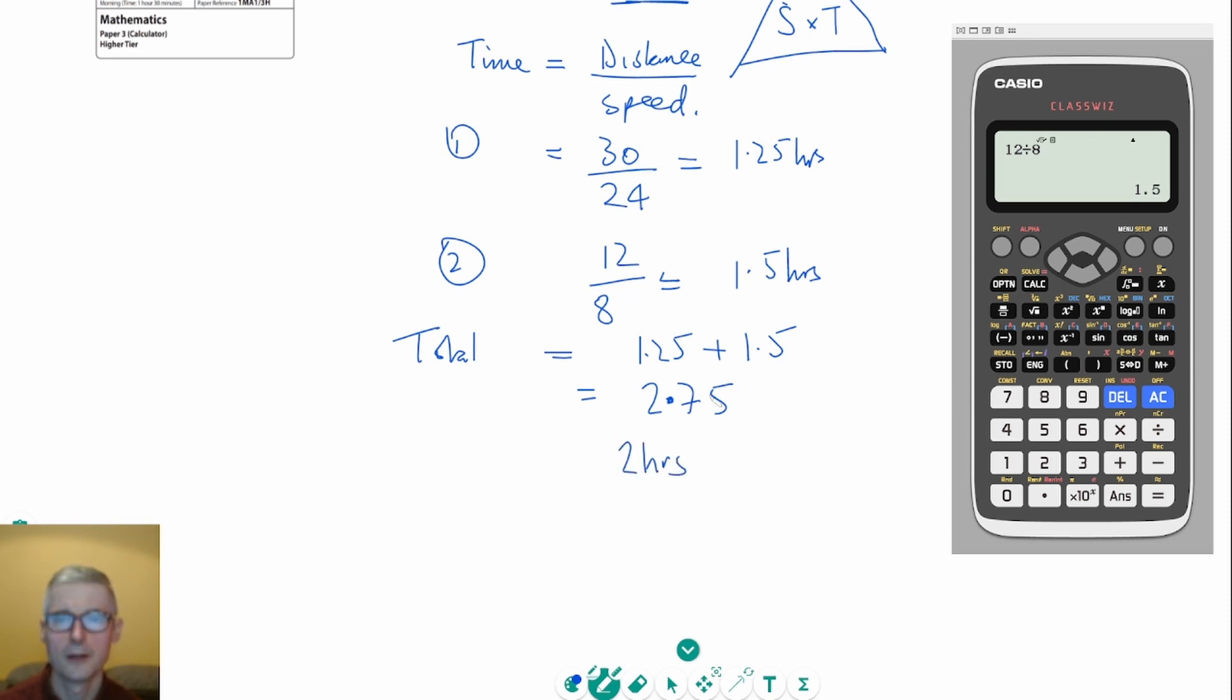We need to convert the 0.75 hours into minutes. All we've got to do is multiply 0.75 by 60 to get it in minutes. Going to the calculator: 0.75 times 60 equals 45 minutes.